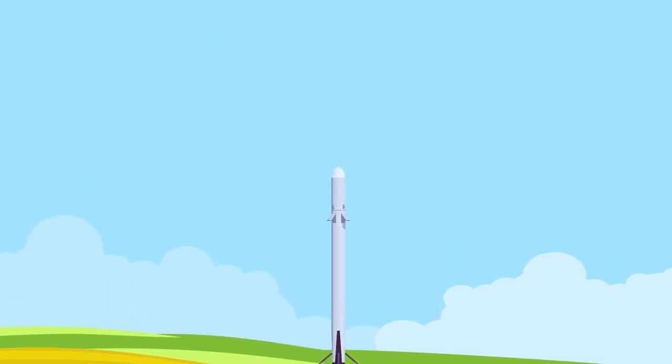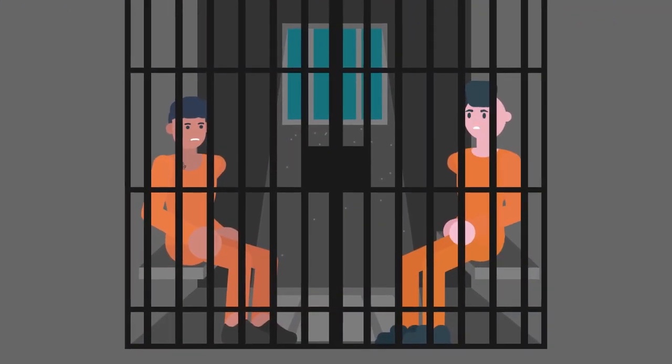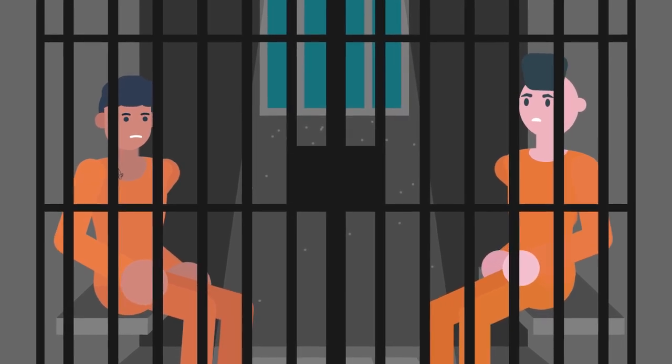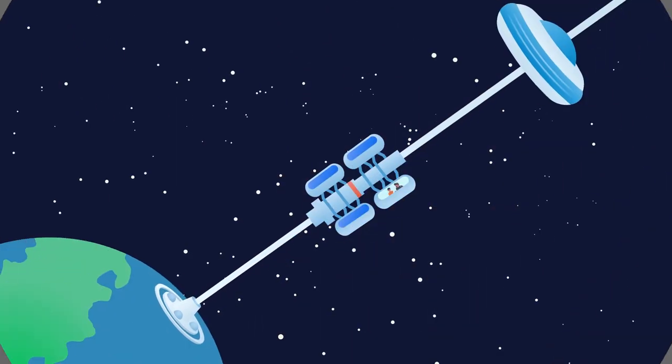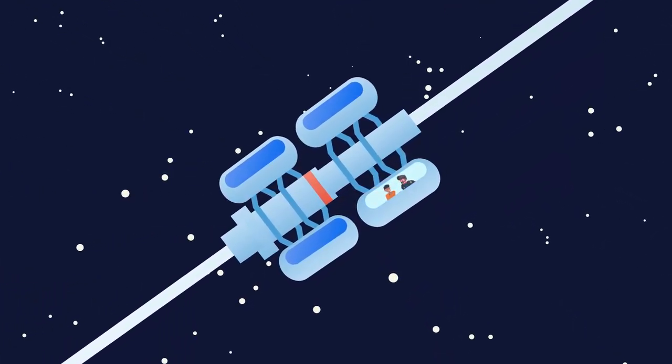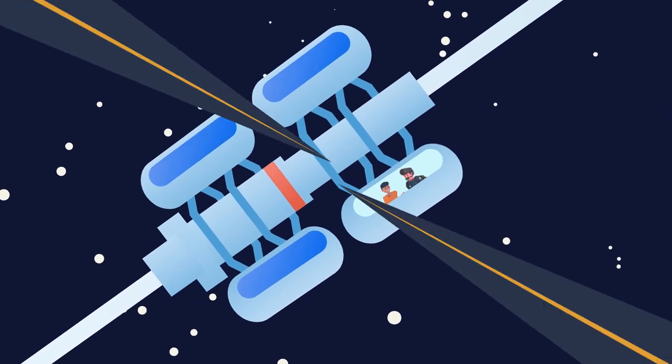But future technology promises to make access to space much cheaper. Reusable rockets such as those pioneered by Elon Musk's SpaceX are a big leap forward, but massive construction projects such as the space elevator will make it possible to put things into orbit at a fraction of the current cost. As humanity expands to the stars, so too will humanity's criminals, who will definitely need a place to be housed.